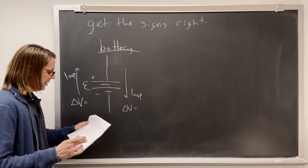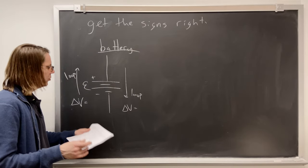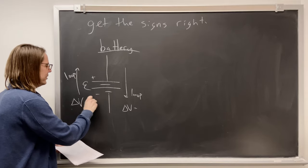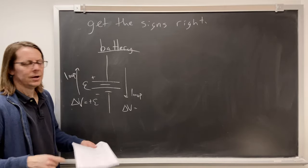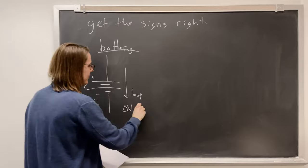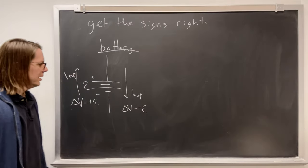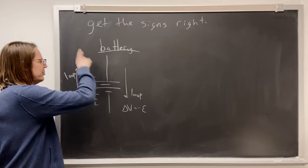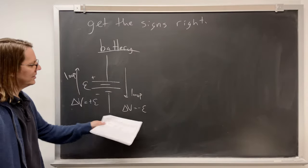Well, this one, it's not really so much a rule, it's just, you know, if you loop from minus to plus, then it's plus EMF. If you loop from plus to minus, then it's minus EMF. Okay, so if you loop with the minus to plus direction, it's positive. If you loop against it, it's negative.